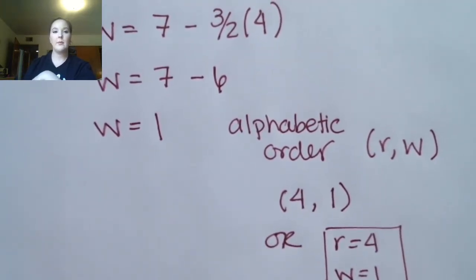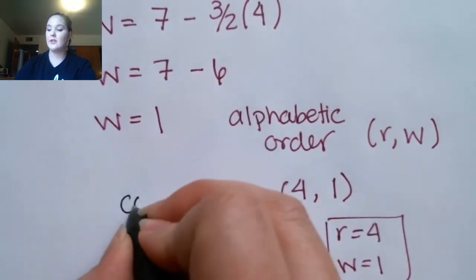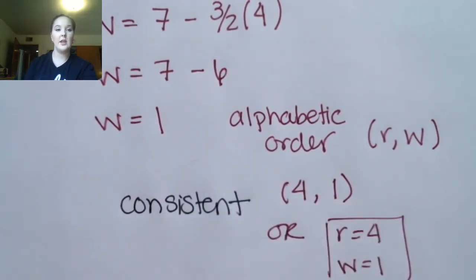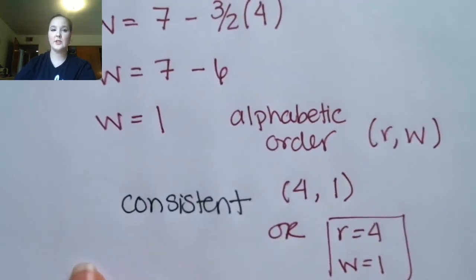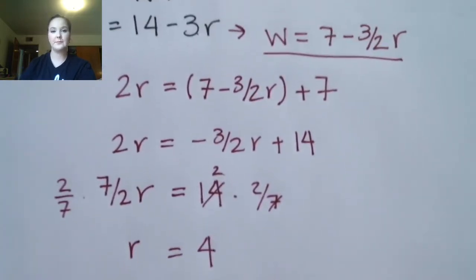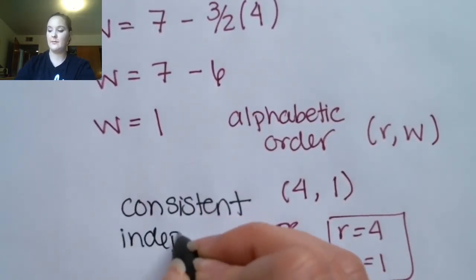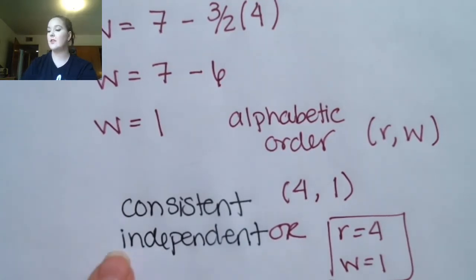Now let's talk about consistent, inconsistent, dependent, and independent. We saw that there was a solution, so that means we are consistent — consistent just means there is a solution. Inconsistent means there's no solution. Anytime you have two totally different equations like these two, that is an independent system. We will see in another example what a dependent system looks like.